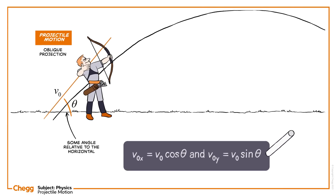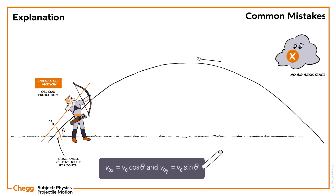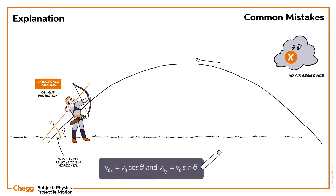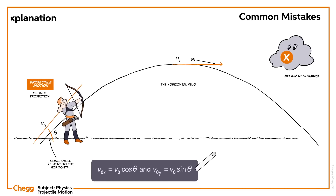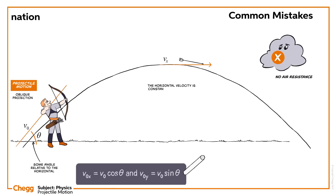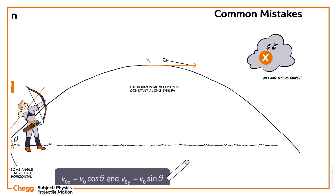Since there is no air resistance or drag force in this scenario, the net force in the horizontal direction is zero. Thus, the horizontal acceleration is zero — Ax equals zero. This means the horizontal component of velocity is constant along the path.